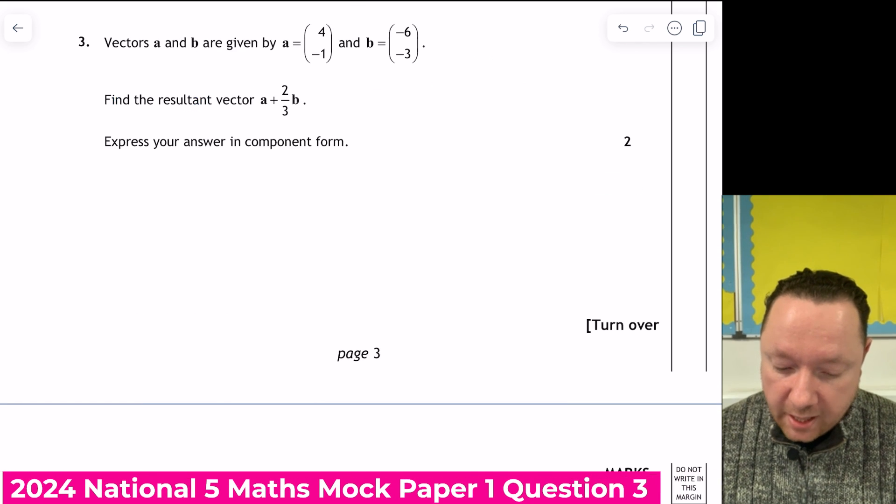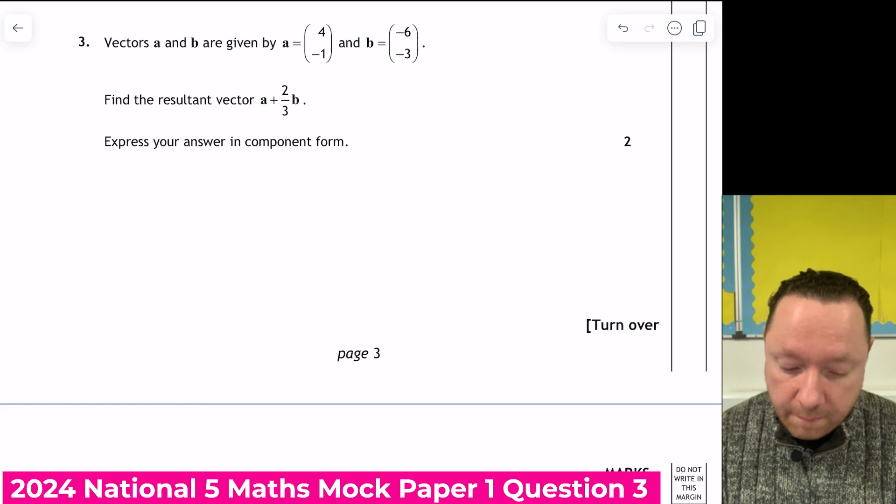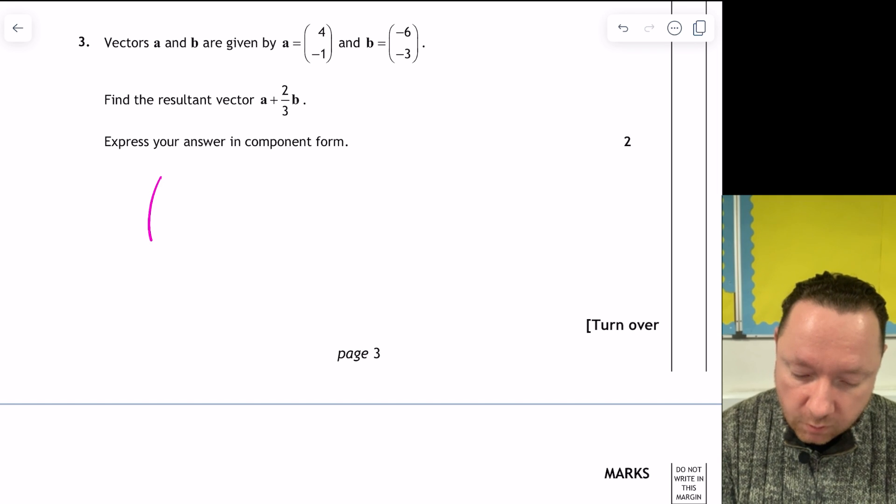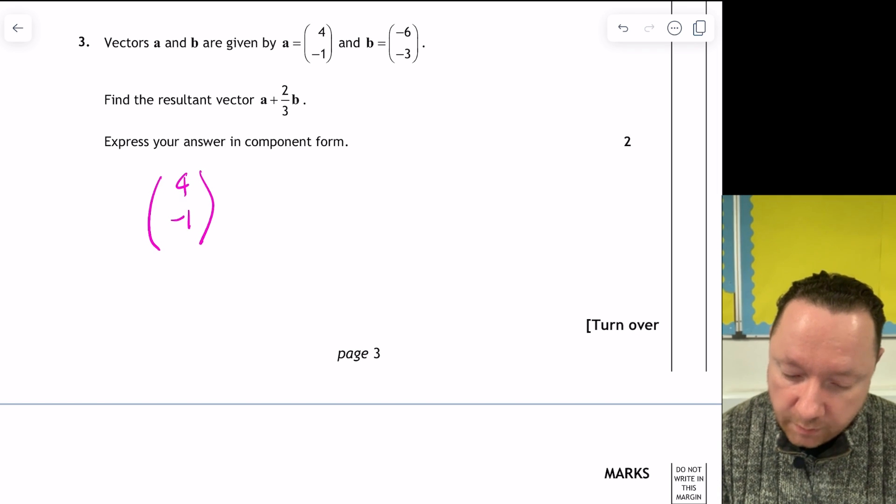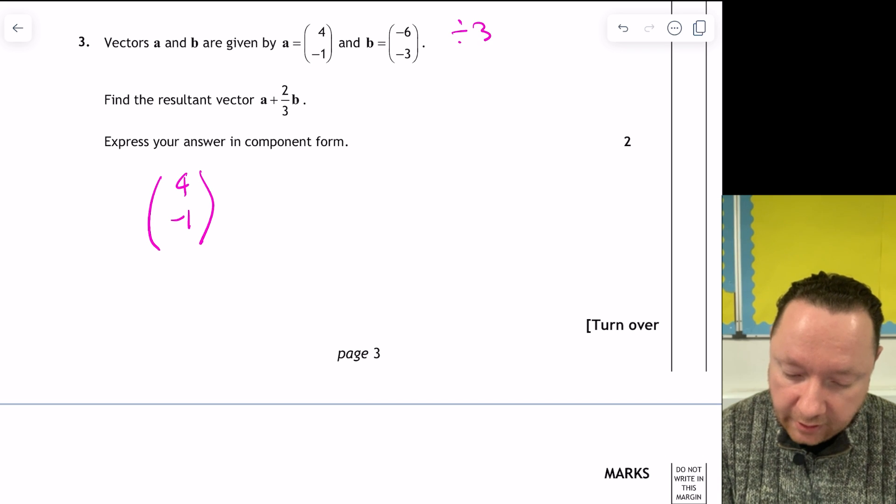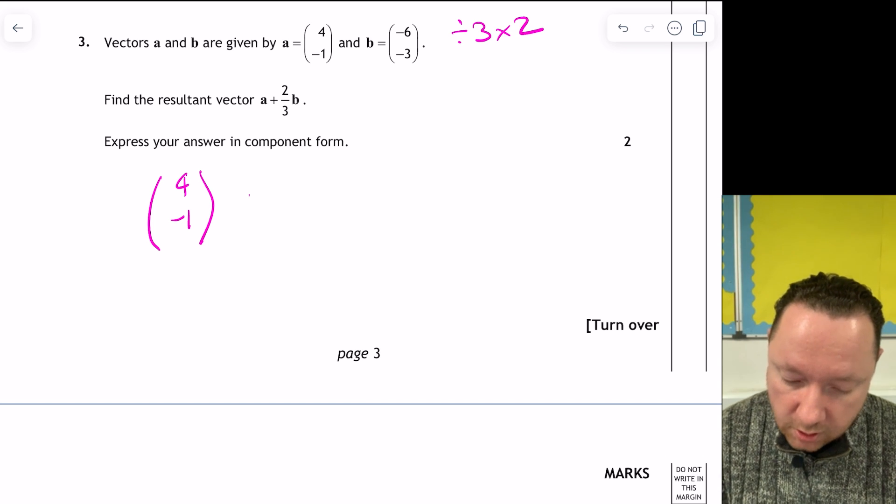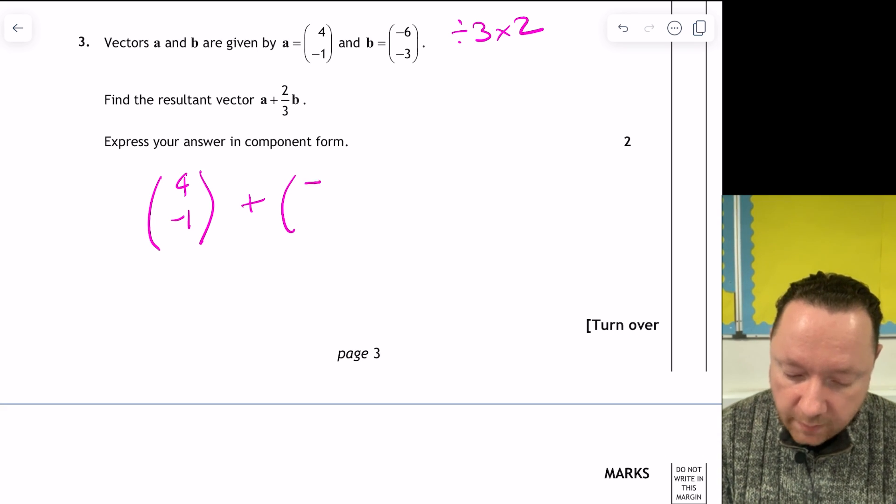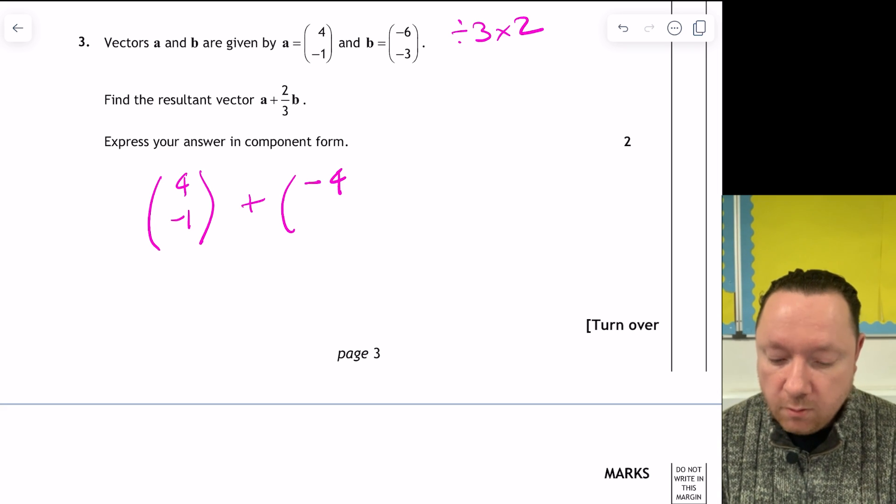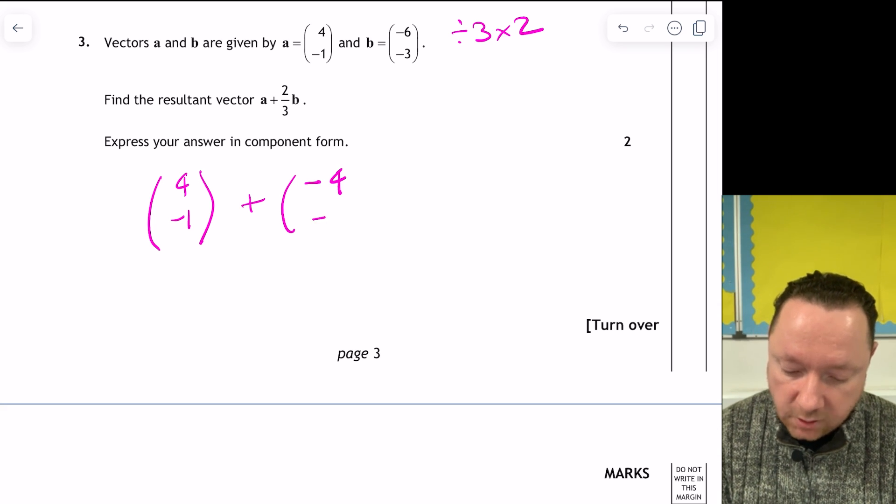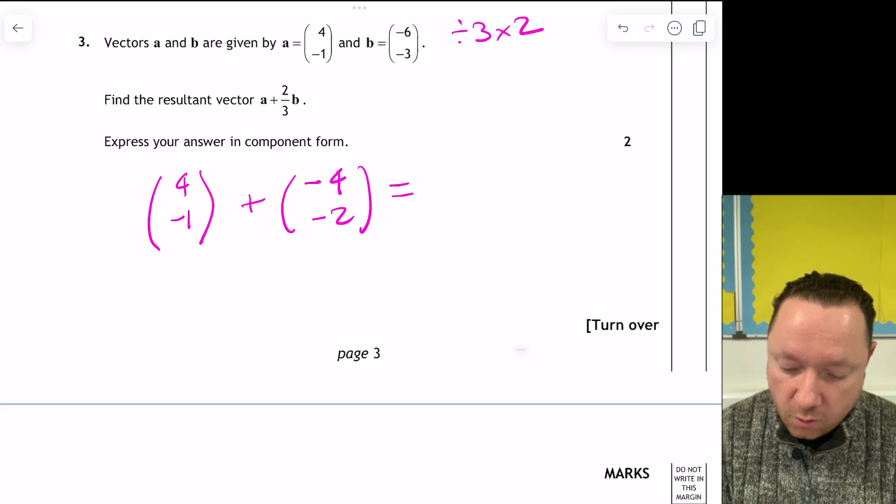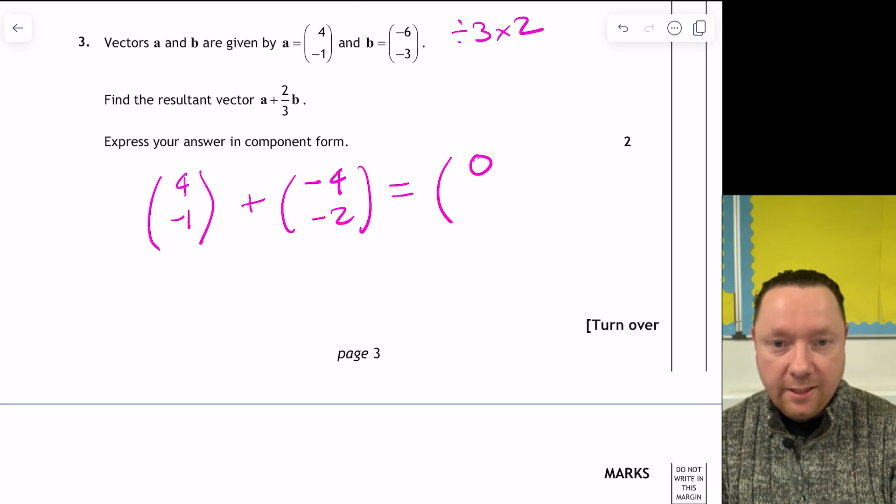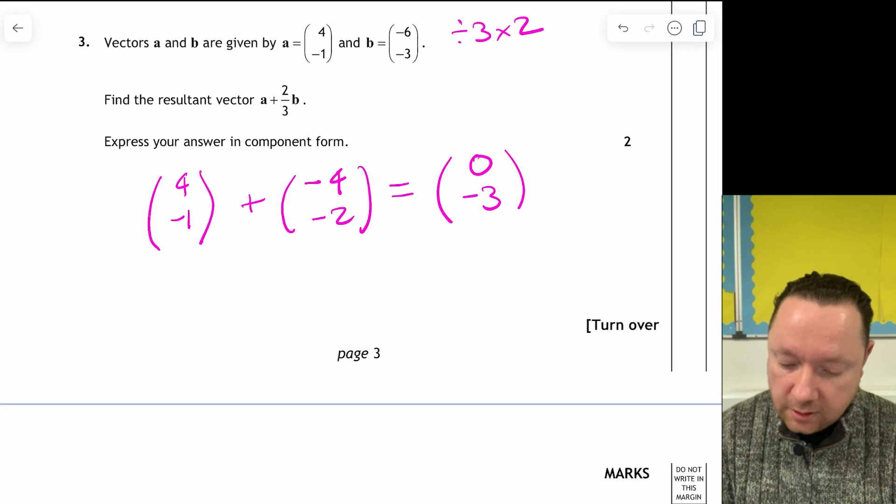Question 3. Vectors A and B are given by A is 4 minus 1, B is minus 6 minus 3. Find the resultant vector A plus 2 thirds B. So I want to do A, which is 4 and minus 1. And then 2 thirds of B means I just divide each of these numbers by 3 and times them by 2. So that's plus 6 divided by 3 is 2. 2 twos is 4, and it's a minus, so minus 4. 3 divided by 3 is 1. 1 times 2 is 2, but it's a minus, so it's minus 2. 4 plus minus 4 is 0. Minus 1 plus minus 2 is minus 3.